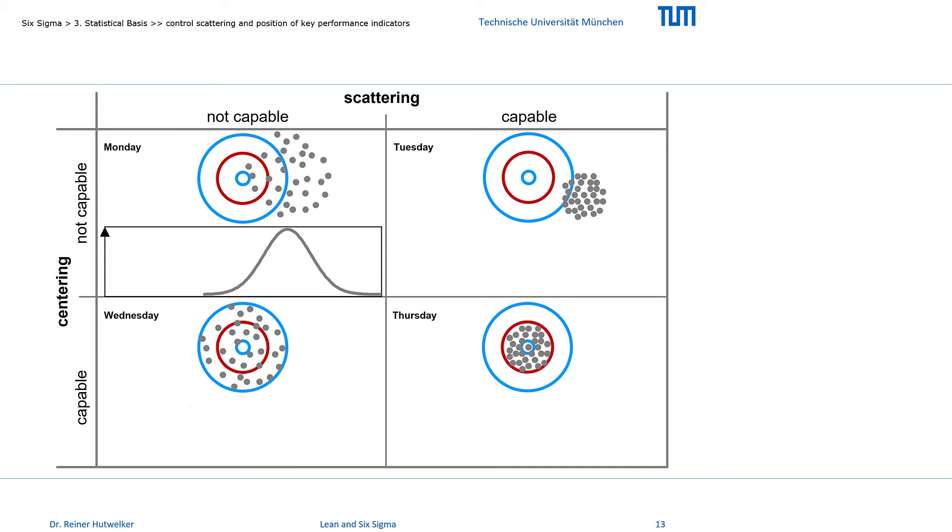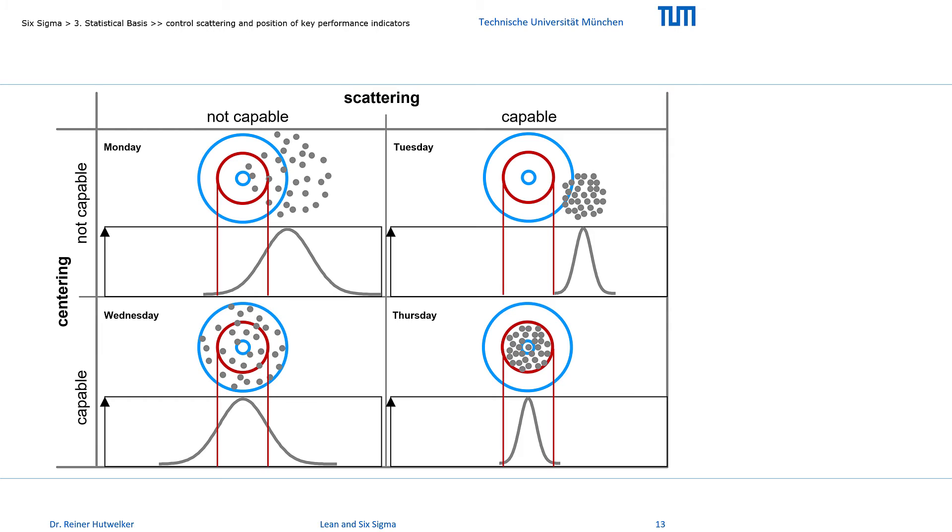If we now drop the weight data on the x-axis, then again, the idealized distributions of the weight result for each of the 4 days. If we now also project the specification limits onto the weight axis, then we can already estimate the portion that falls within and outside the specification limits on the respective days. On Wednesday, for example, we achieved the results of about 1 Sigma. And Thursday was our best day.